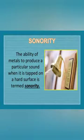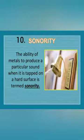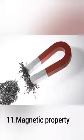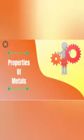Next is sonority. Sonority is the property of an object to produce sound. When metals are hit with an object, they produce a sound — so metals are sonorous. The next and last physical property is magnetic properties. Some metals like iron, cobalt, and nickel show magnetic properties; these metals are attracted by a magnet when placed in a magnetic field.